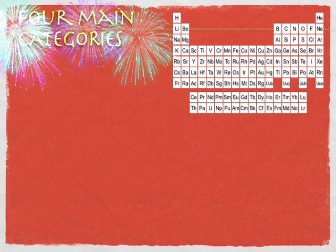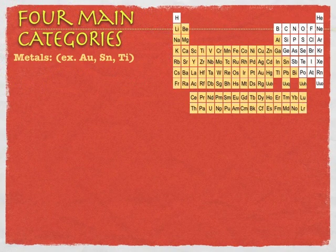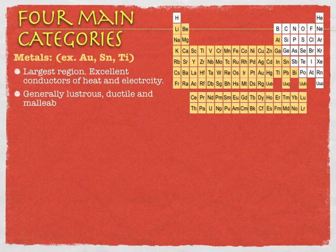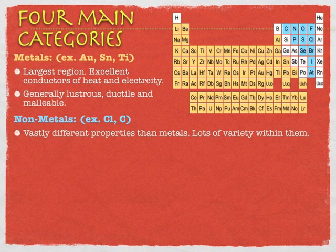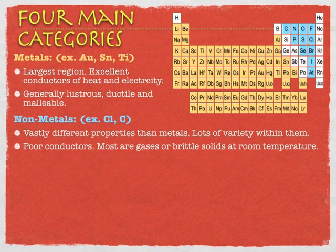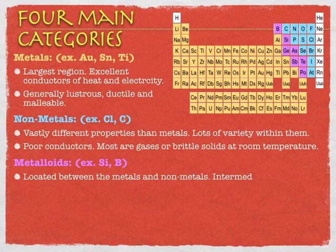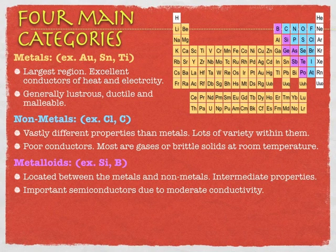There are four main regions of the periodic table: metals, nonmetals, metalloids, and noble gases. Metals are by far the largest region — not because there are necessarily more metals out there, but based on atomic structure and electron configuration, they end up being metals. They tend to be malleable, ductile, and good conductors of heat and electricity. Nonmetals have a lot of variety in their properties, even though they're a small chunk of the periodic table — you're going to see gases and brittle solids in there.